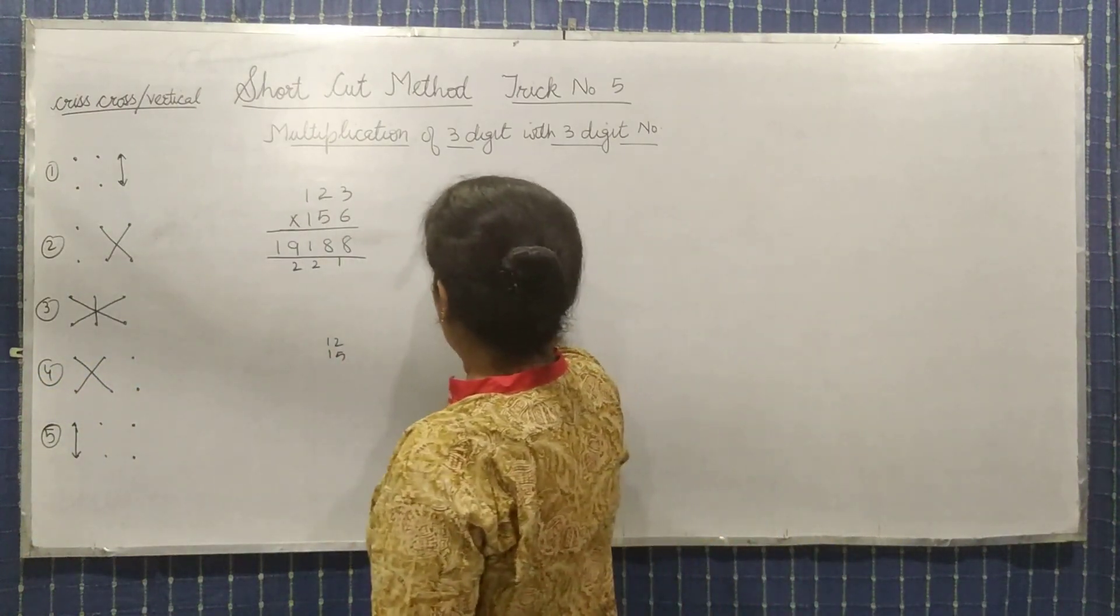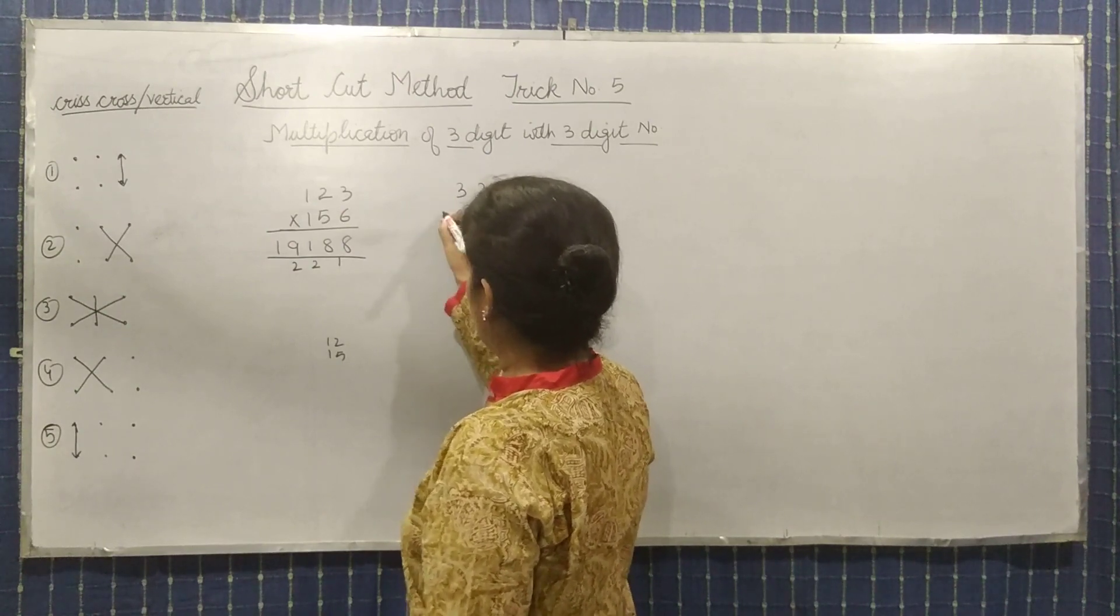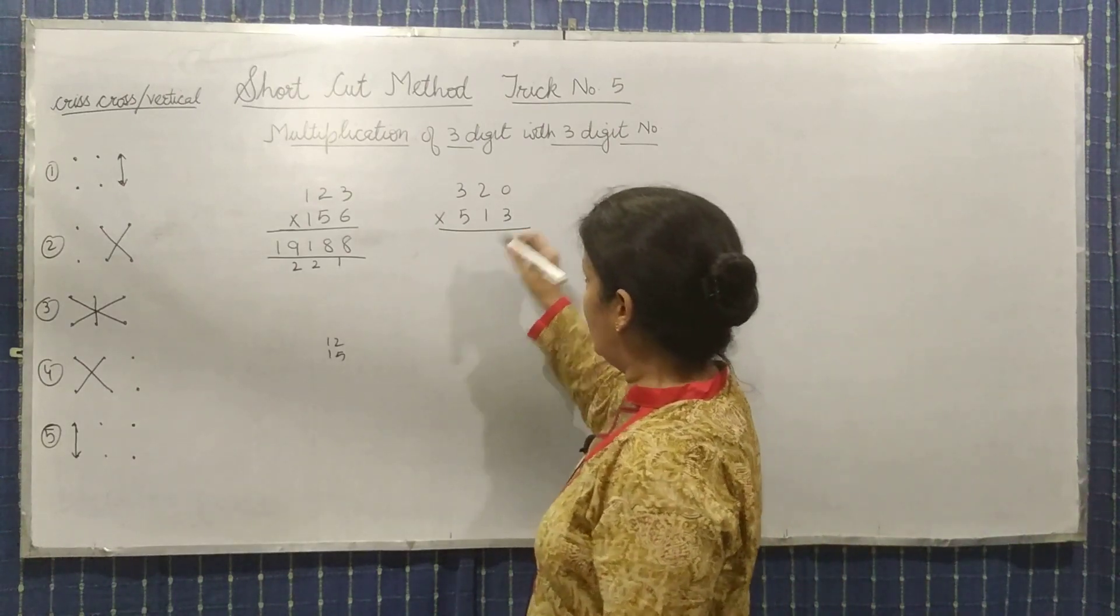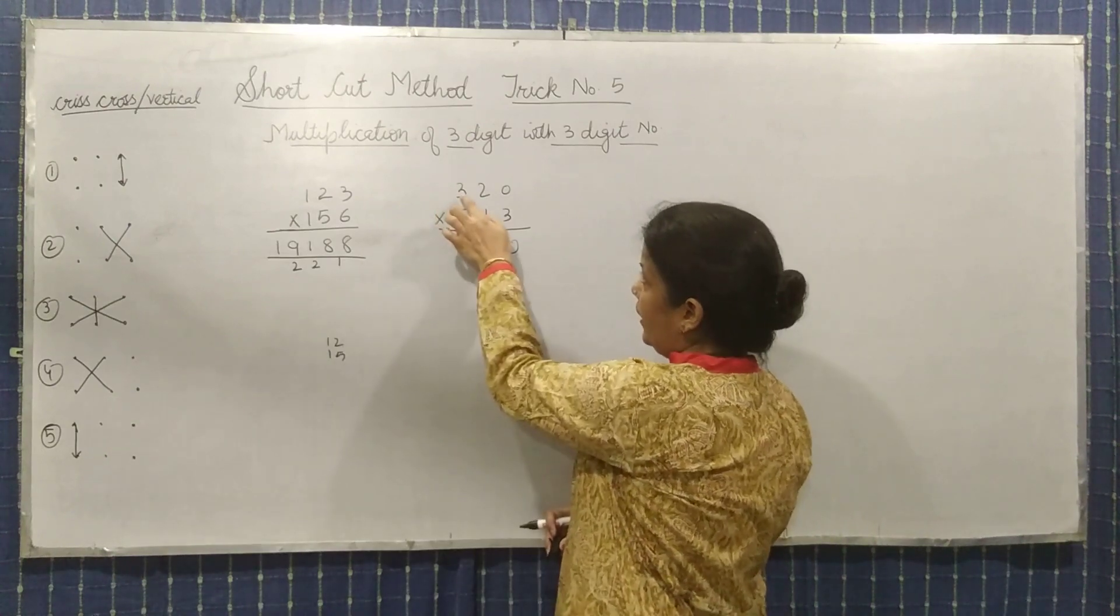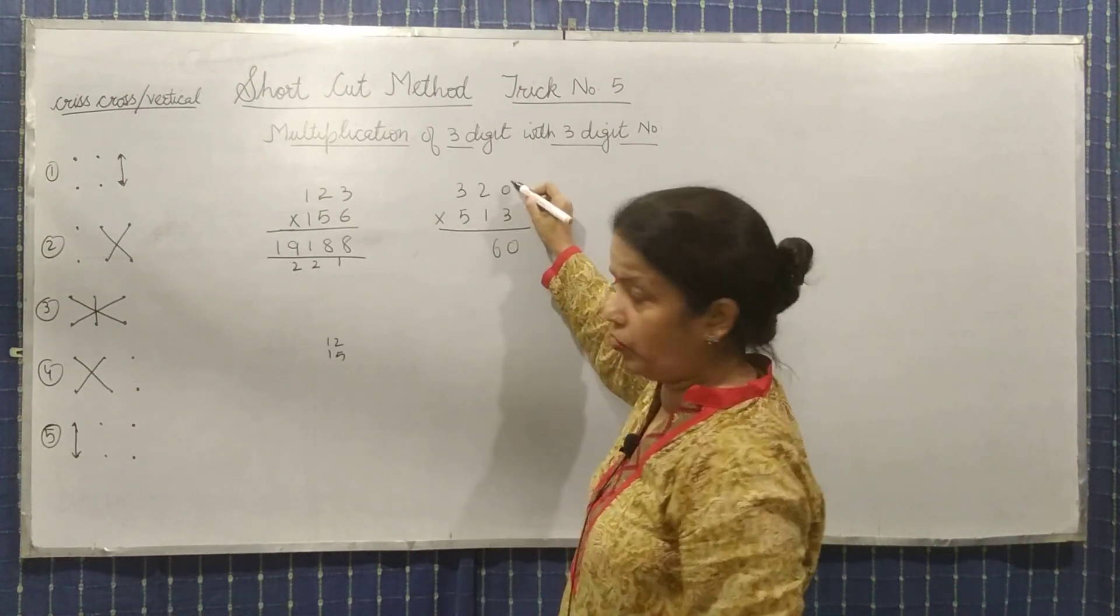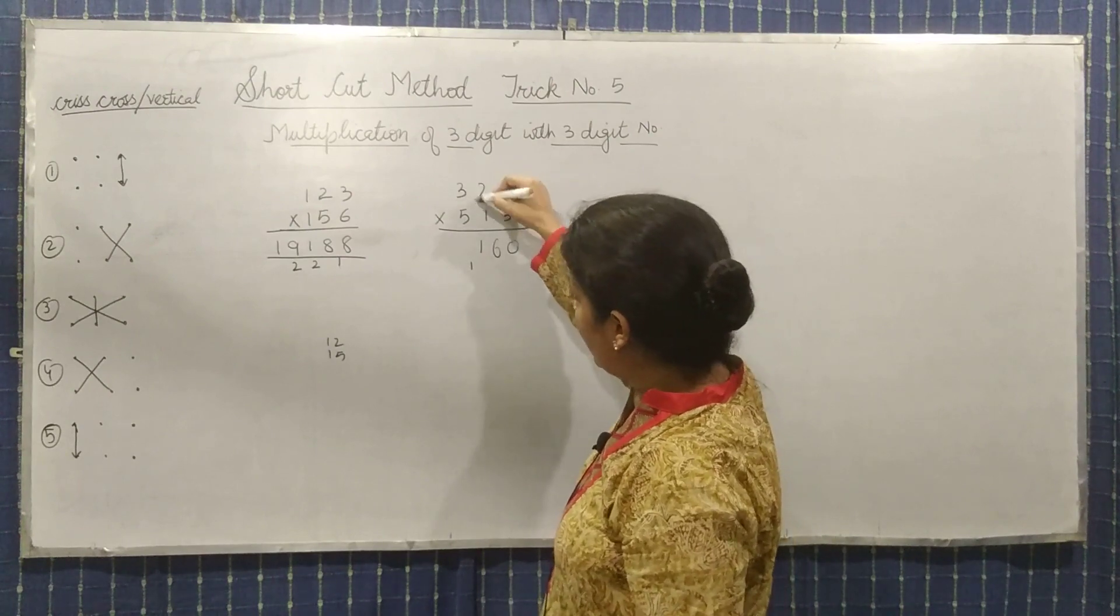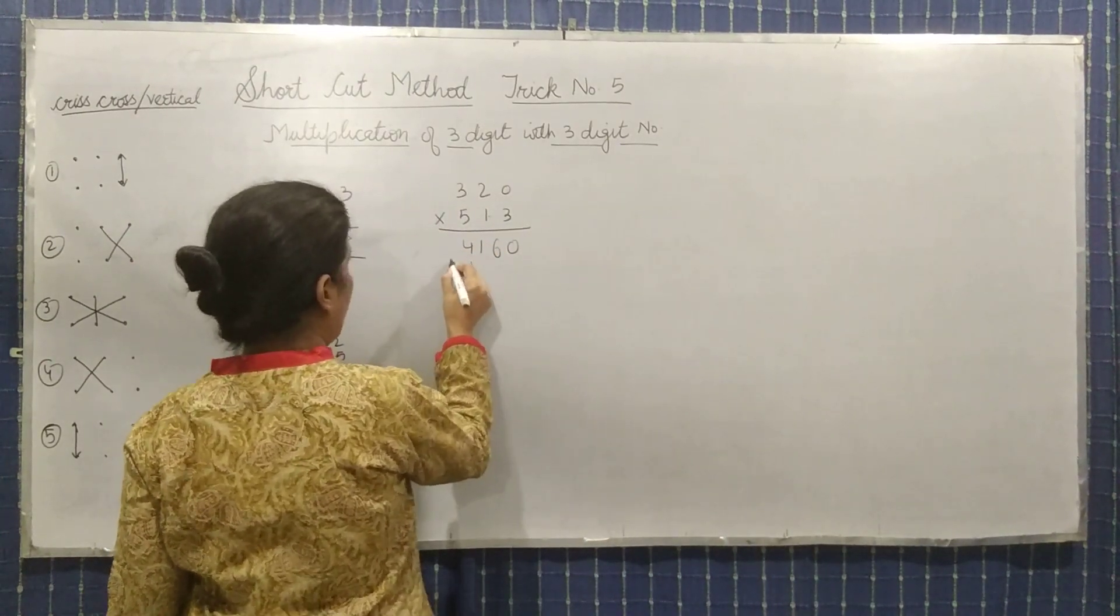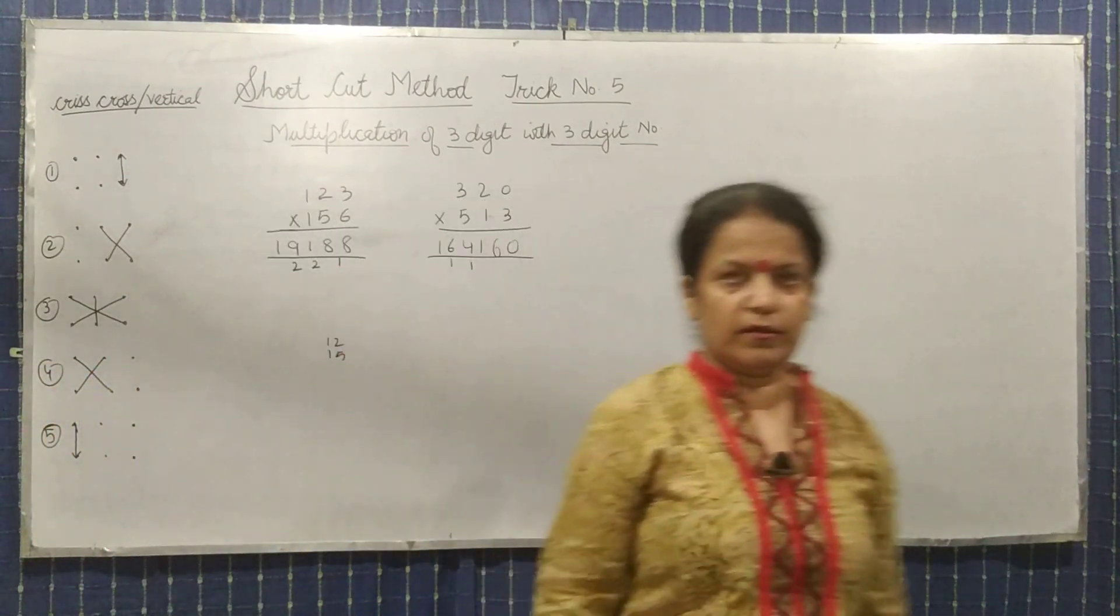One more we will take. Three, two, zero. Five, one, three. Now again we will use the steps. Vertically multiply first step. Now cross multiply - this is zero and this is six. Now your third step: extreme cross multiply and vertically multiply. Extreme cross multiply nine, this is zero, and multiply this: two. So nine plus two is eleven, one carry. Now multiply these two: three and ten. Thirteen plus one is fourteen, and again one carry. Multiply these two: fifteen plus one is sixteen. So this is the answer. Clear?